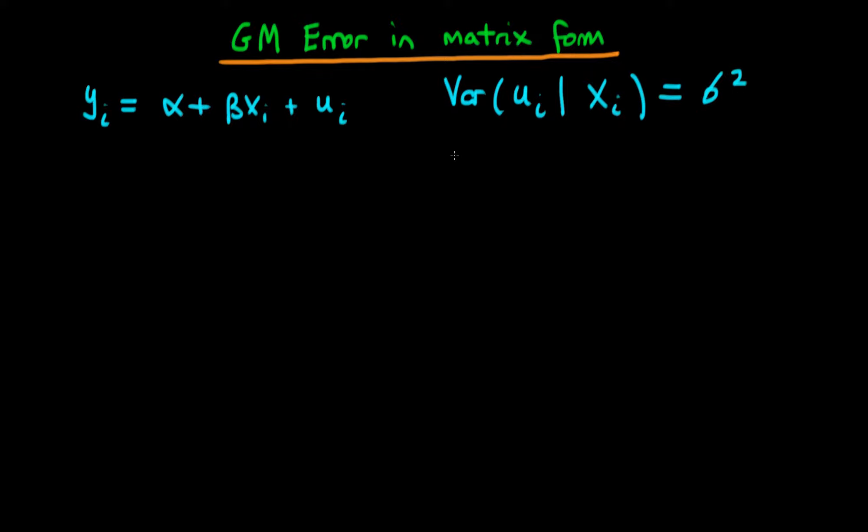In order to have no autocorrelation we required that the covariance of an error ui with another error uj given the independent variables xi and xj had to be equal to zero. That's saying there's no covariance between the two errors and this only has to hold when i ≠ j because when i = j there is going to be some covariance given by σ².